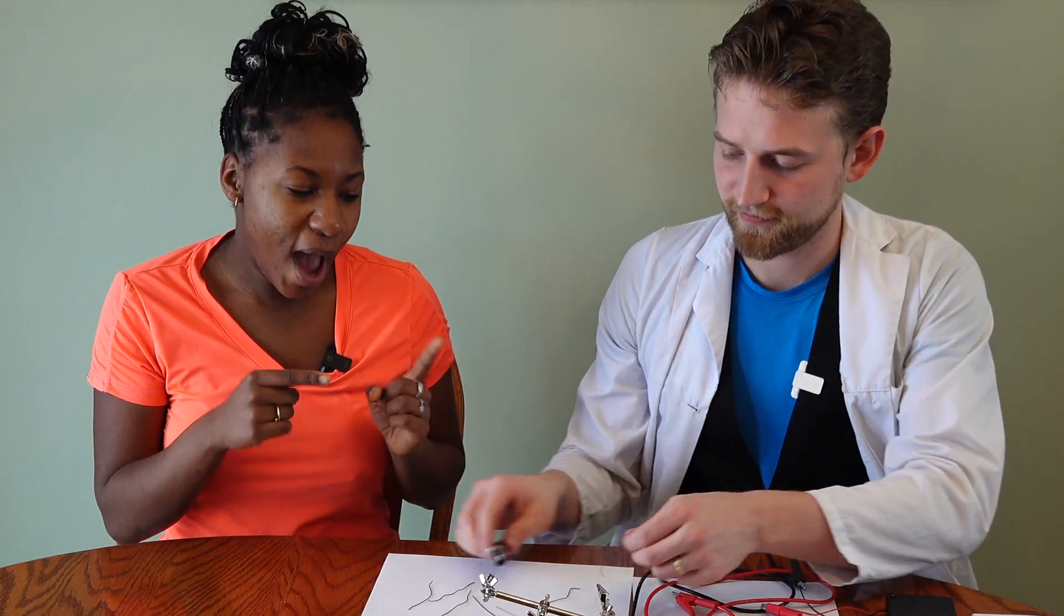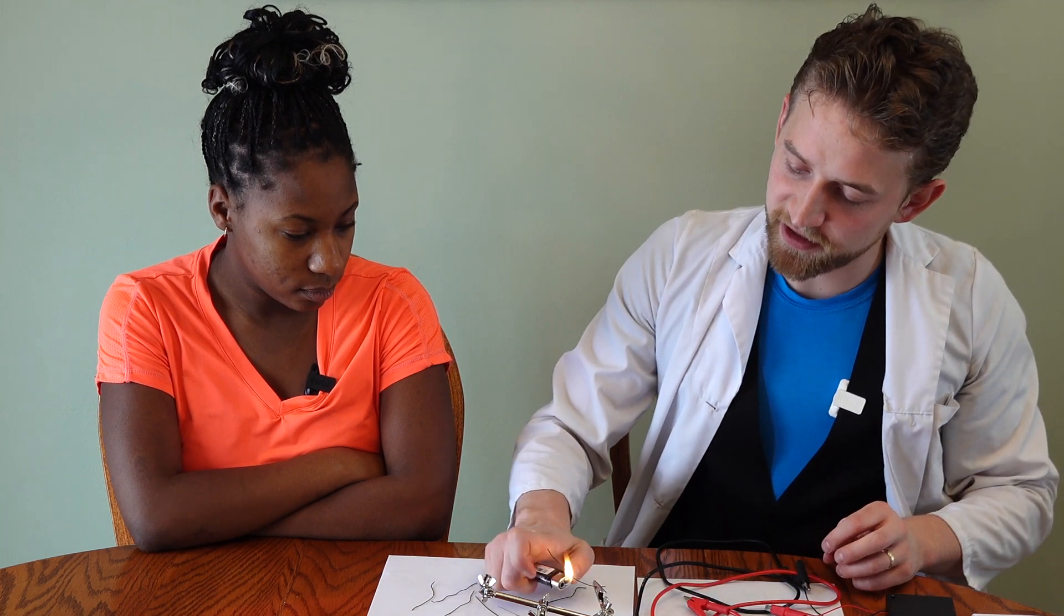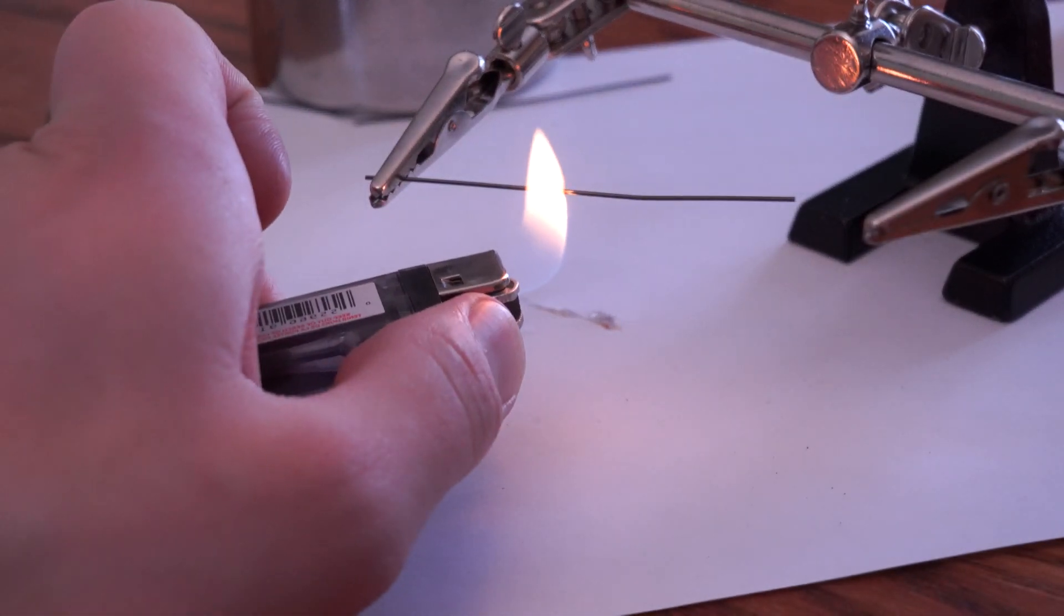We're going to show you how to change the austenite state, so that you can control what shape it remembers. So to start with, we're just going to start with a straight piece of nitinol memory wire to warm it up. So currently, it's remembering a straight piece of wire.